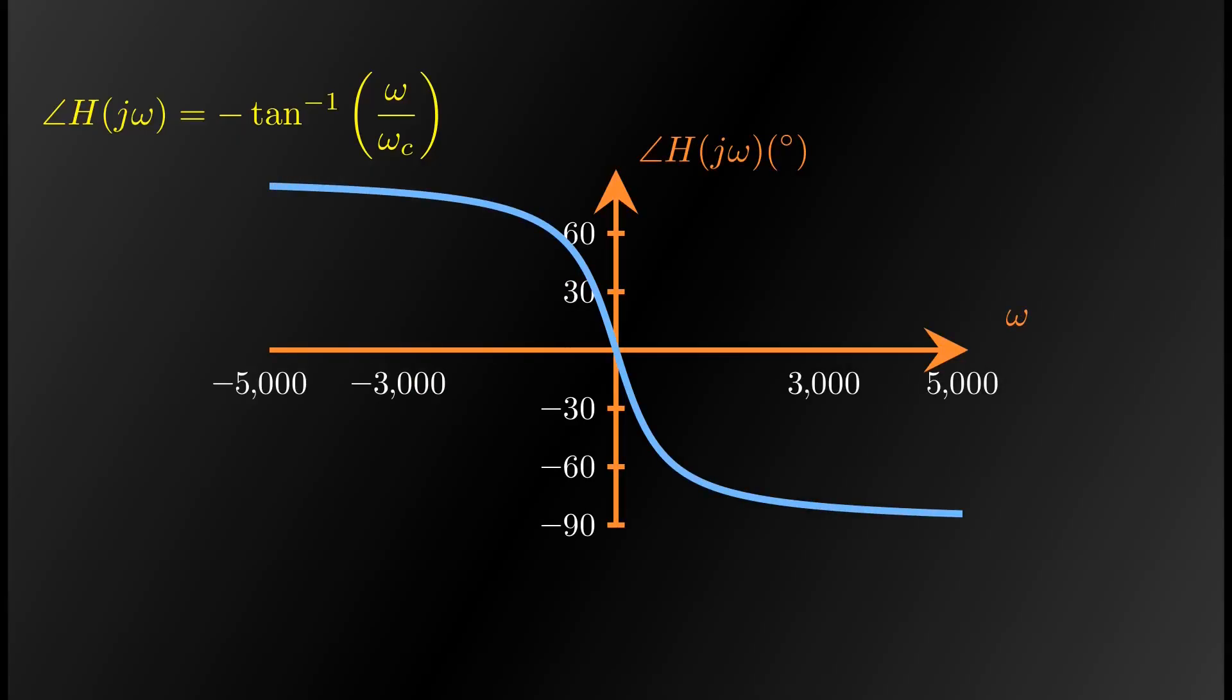We have two horizontal asymptotes, one at plus 90 degrees, and another at negative 90 degrees. These asymptotes imply that the phase shift cannot exceed 90 degrees.